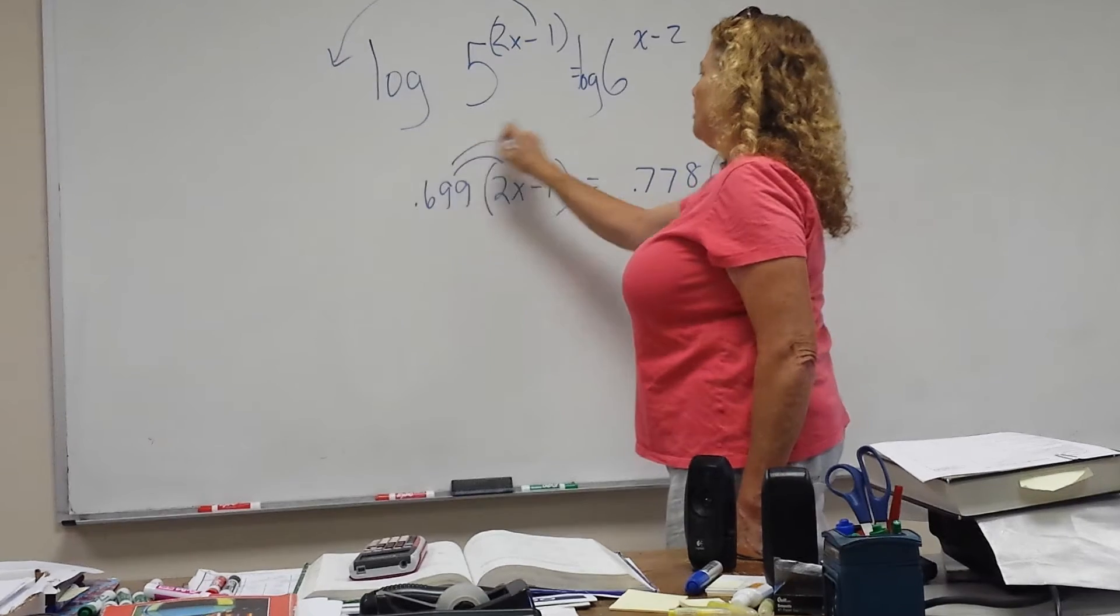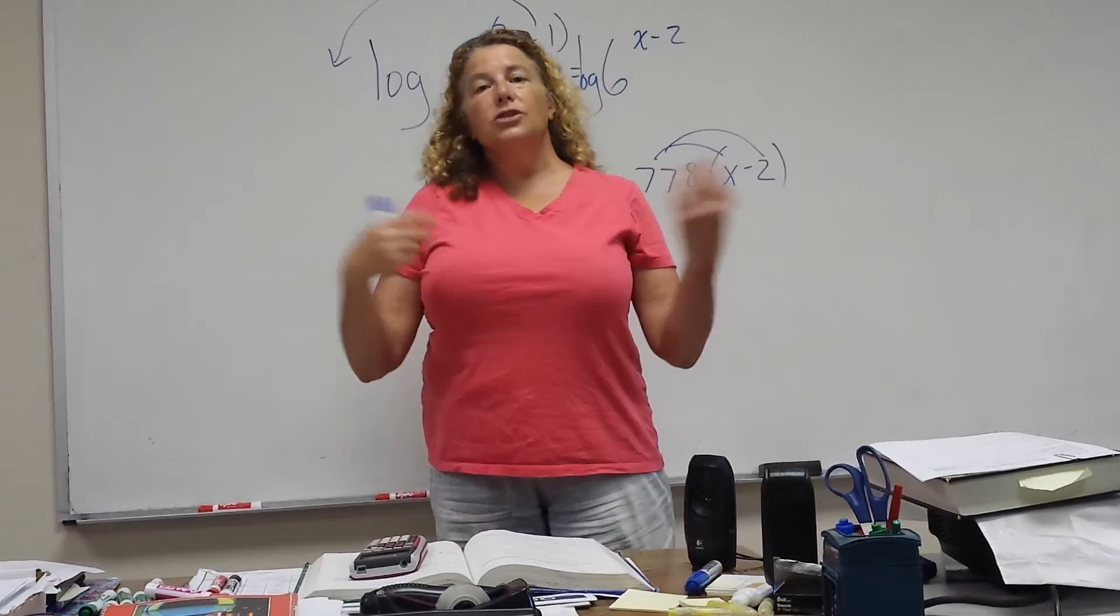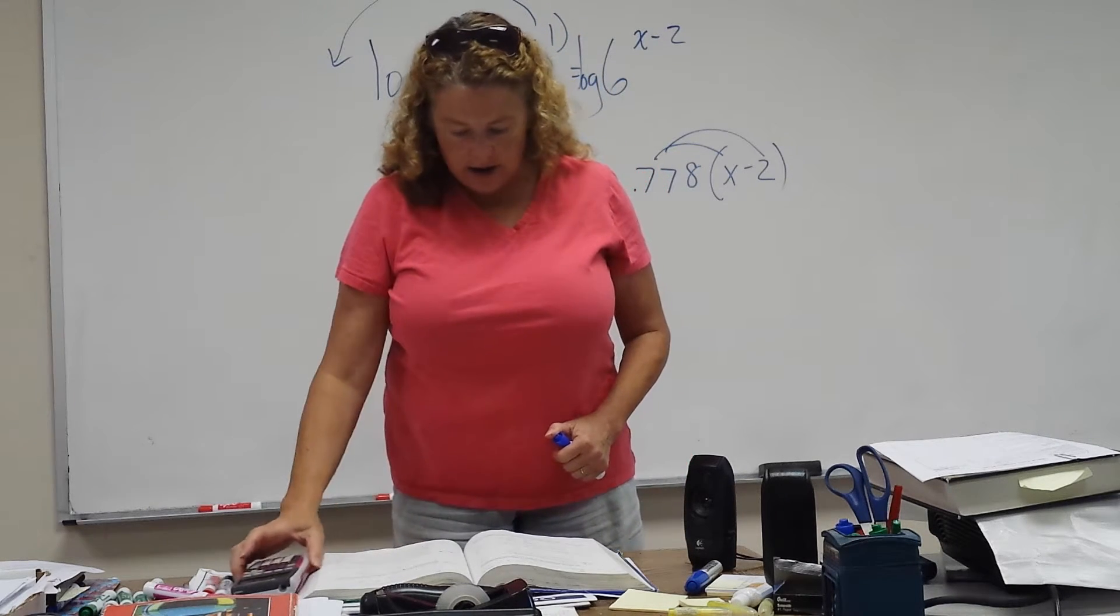And then you would do log 6 and you get .778. So you have .778 times x minus 2. And then use your distributive property and solve for x. You have a calculator, so it's nice and easy to solve these.